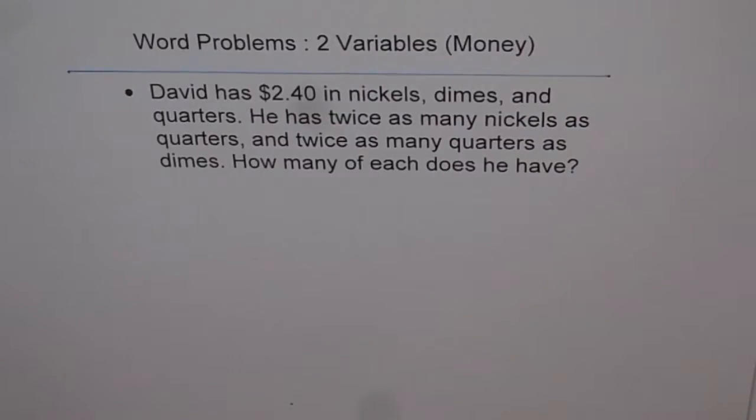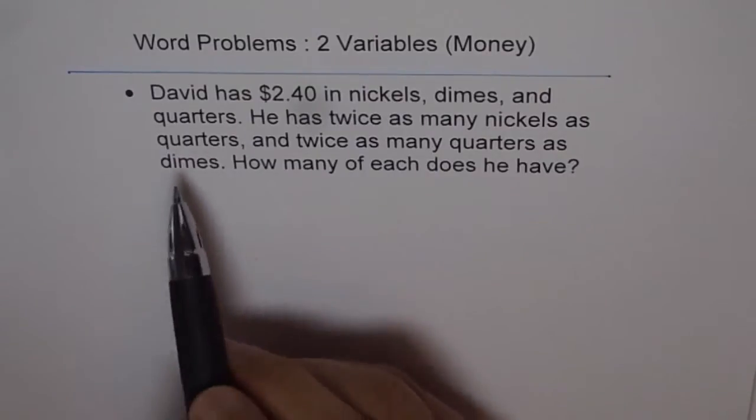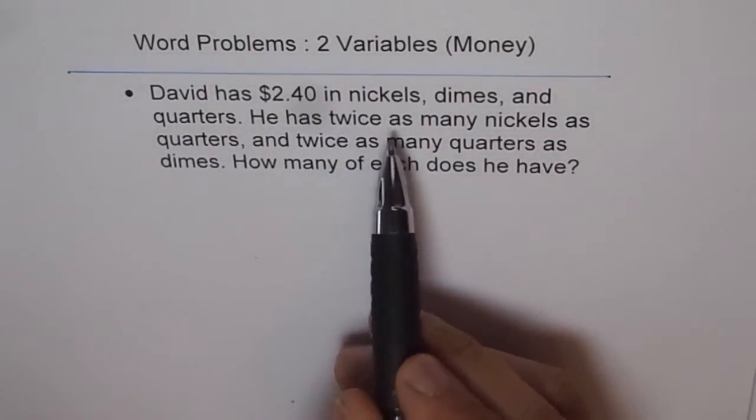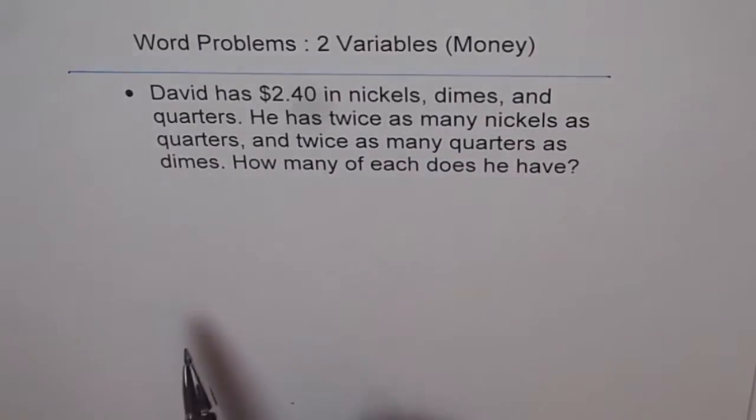Now let's solve a problem dealing with nickels, dimes and quarters. David has $2.40 in nickels, dimes and quarters. He has twice as many nickels as quarters and twice as many quarters as dimes. How many of each does he have?